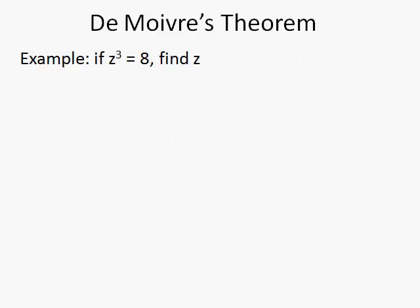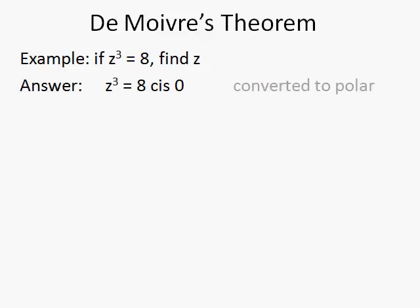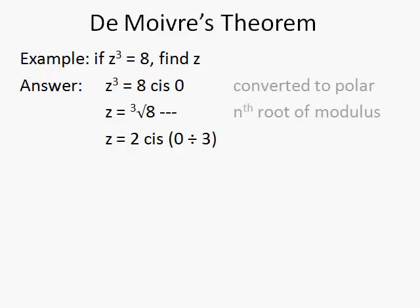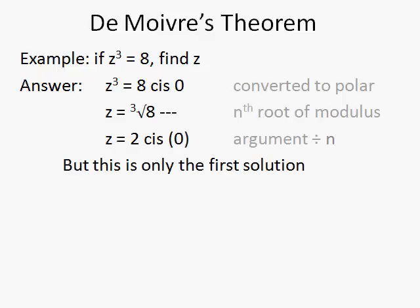For example, if z cubed is 8, a real number, we need to find z. So we convert it to polar form, find the nth root of the modulus — the cube root of 8 is 2 — and we divide the argument by 3, which gives us our argument. But it only gives us the first solution: z₁ is 2 cis 0.